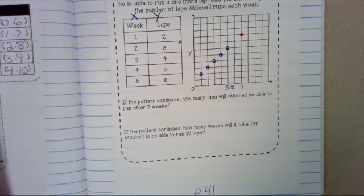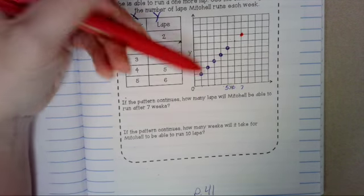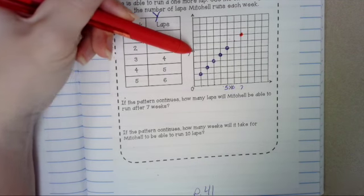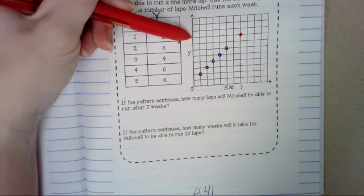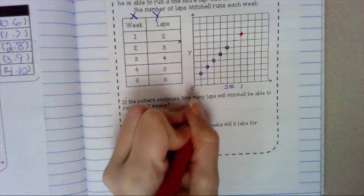So if the pattern continued, this would be 6. And this, right here, would be 7. So how many laps would that be? Well, 1, 2, 3, 4, 5, 6, 7, 8. That would be 8 laps.